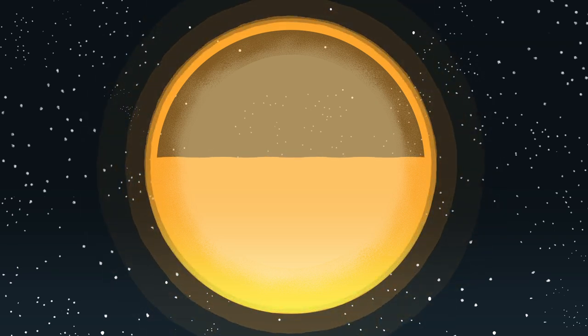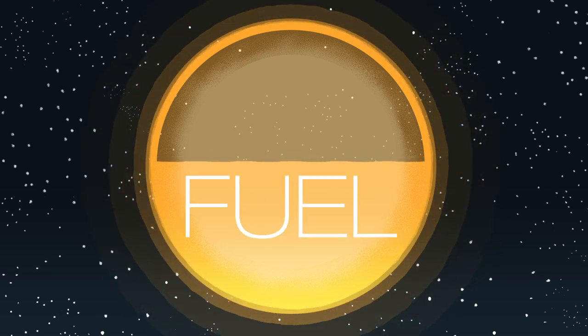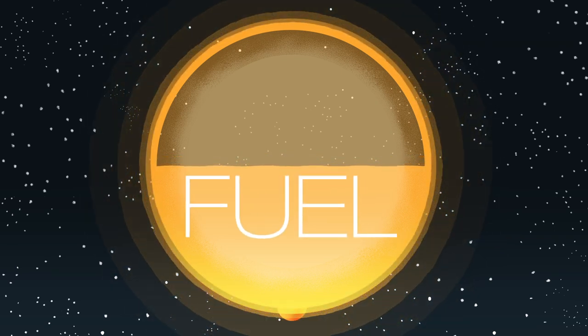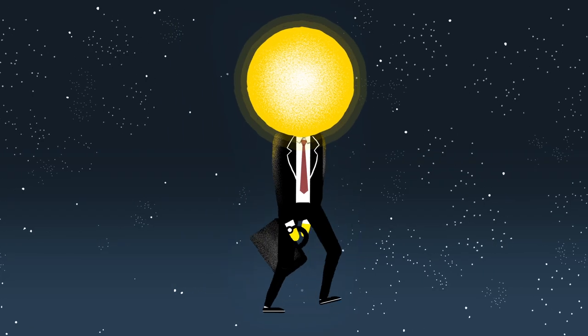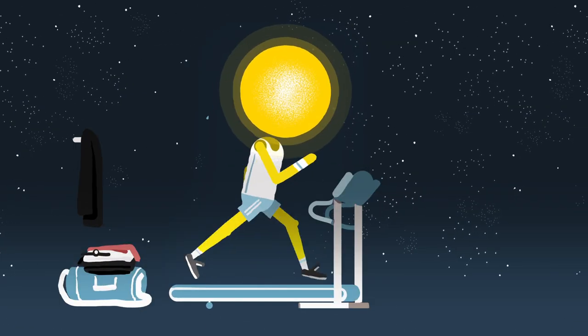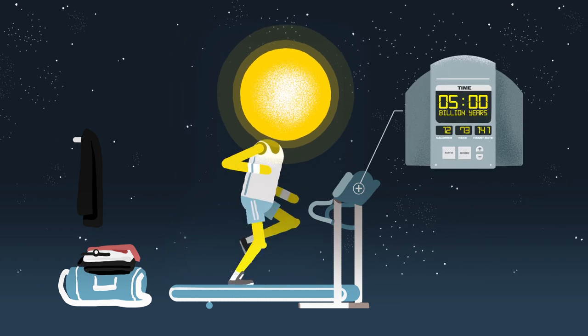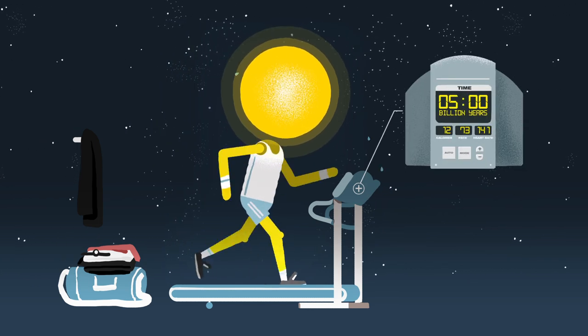Finally, if we know how much fuel our star has, we can find out how long it will last. It turns out the Sun is a middle-aged star, as it has enough fuel to keep going for another 5 billion years. After which the star we know and love will start to look very different.